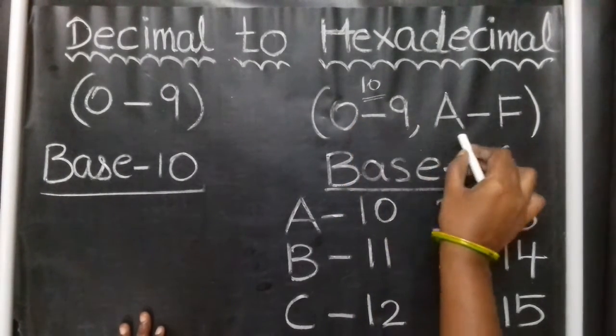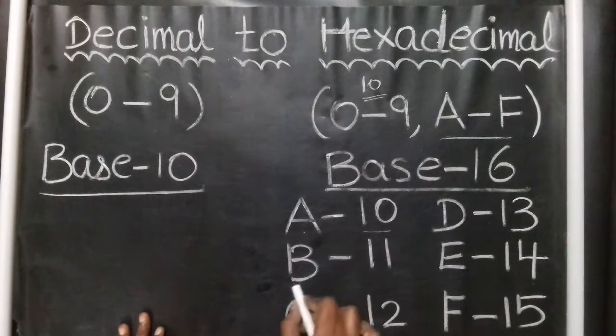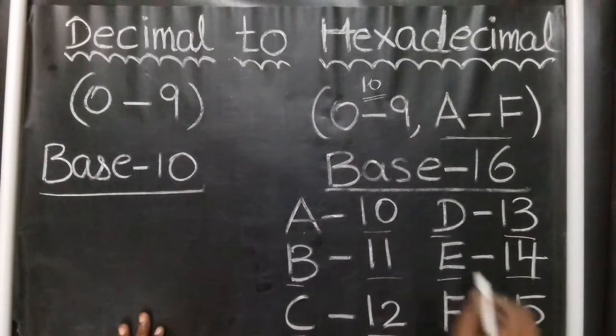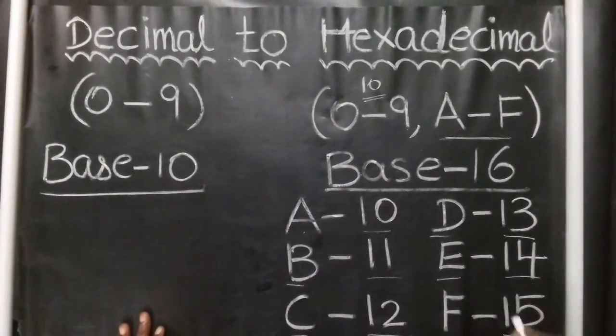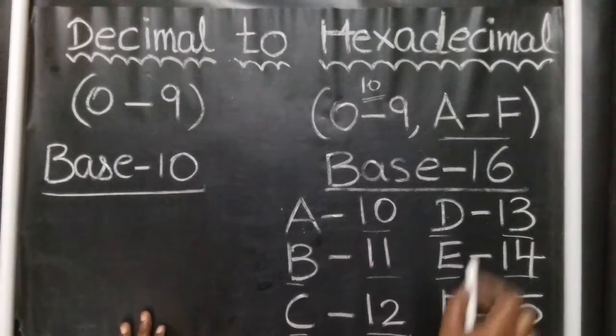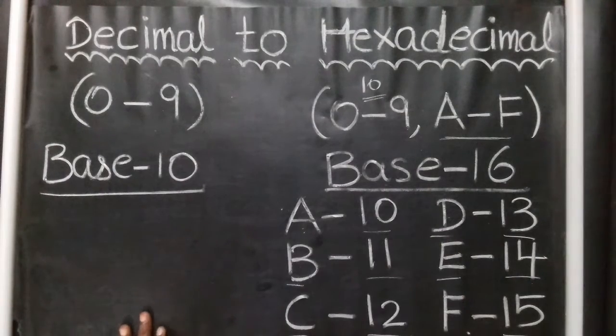Hexadecimal uses 0 to 9, that's 10 digits. Apart from that, A to F letters. A corresponds to decimal 10, B is 11, C is 12, D is 13, E is 14, F is 15. That's 6 letters, so 10 plus 6 equals 16, base 16 system.